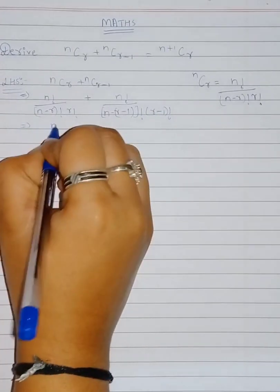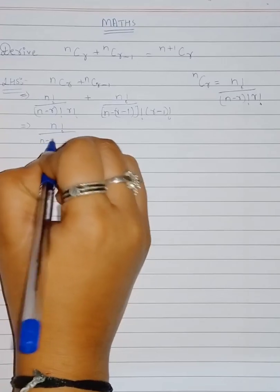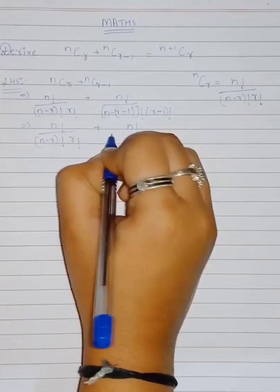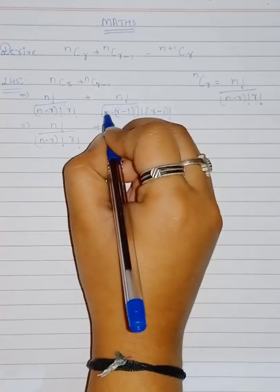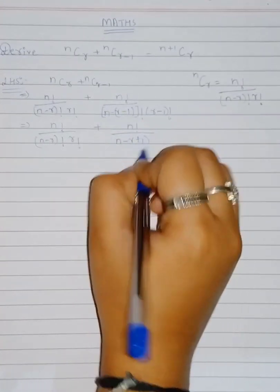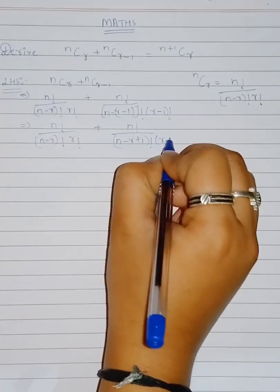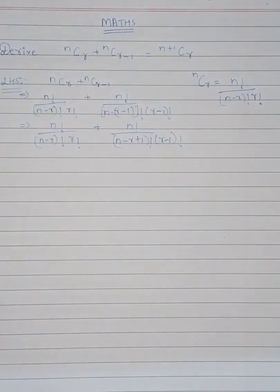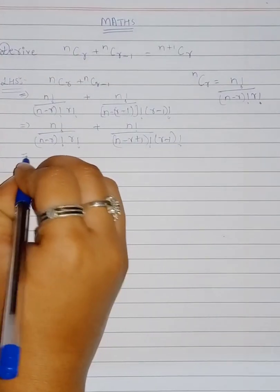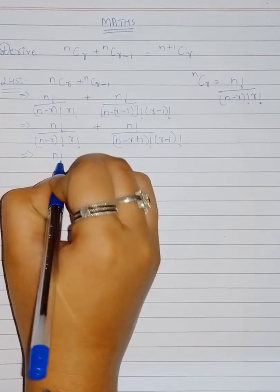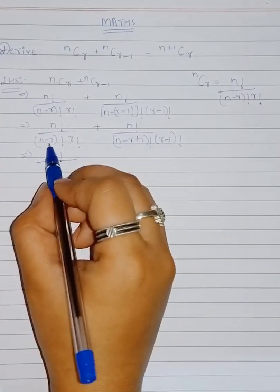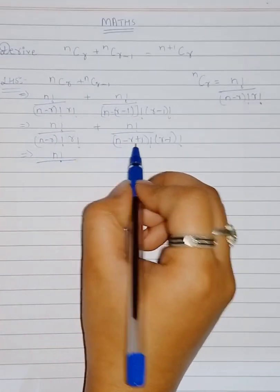So we have n! / (n−r)! plus n! / [(n−r+1)! · (r−1)!]. Next, we should reduce the higher term into the lower term. To take n! as common, we consider the denominator: (n−r)! is lesser than (n−r+1)!.